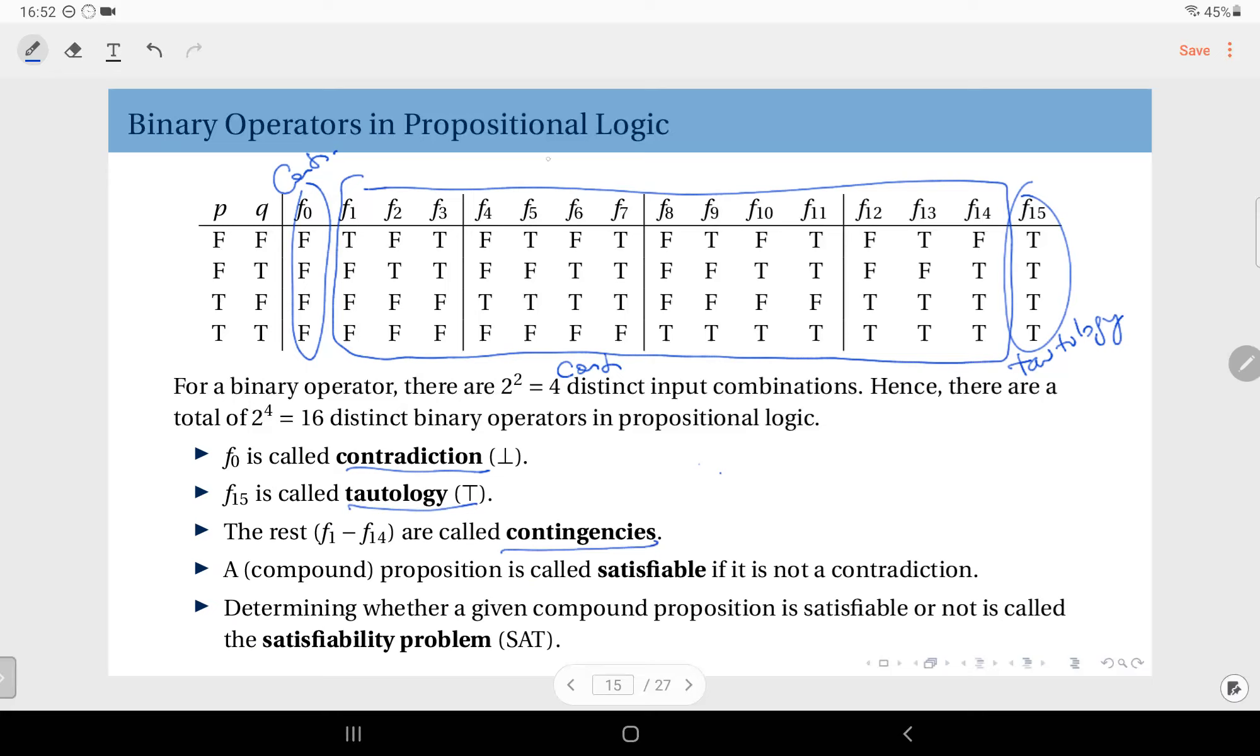And the ones that are not contradictions, so contingencies along with tautology, we call satisfiable. Meaning that they are true for at least one input combination. Even if it is one, just the one, that is sufficient to make it satisfiable. For instance, take F1. It's true only when the input is P equals false and Q equals false. And it's false in all other combinations. But that is sufficient to make it satisfiable. There exists an input combination that makes this operation true. Therefore, we call it satisfiable.